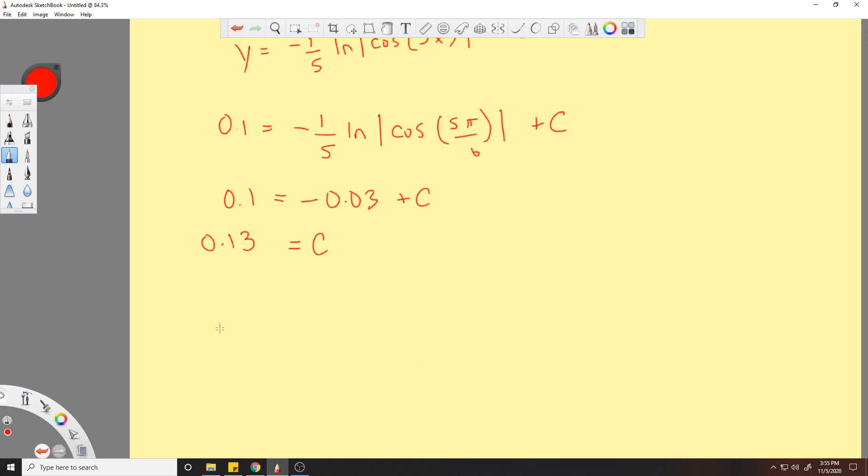So now we plug in C to our equation from before, just plugging it in up here: negative 1/5 ln cos 5π/6 plus 0.13.